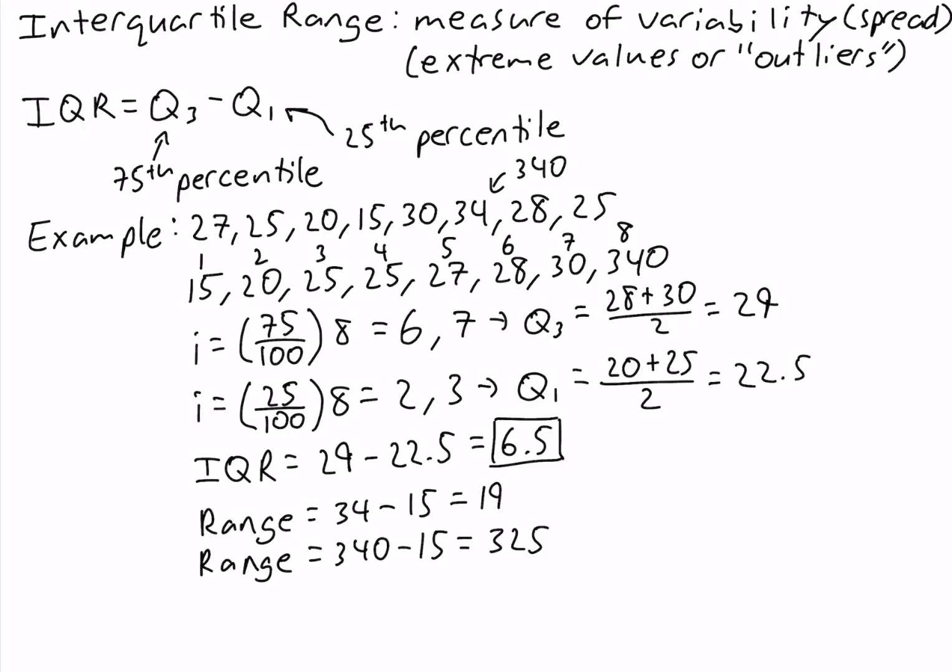So the interquartile range is unchanged when we have that one extreme value in the data. That's why we say the interquartile range does a good job of measuring variability when there are extreme values in the data.